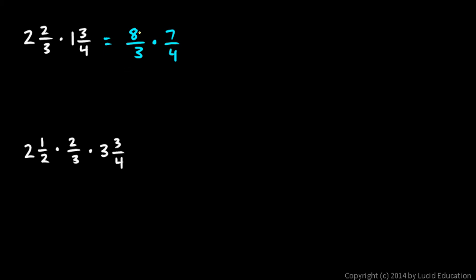And now before I multiply, we can simplify, look at the 8 here and the 4 here, that will reduce to a 2 and a 1, and that just makes the multiplication easier. 2 times 7 is 14, 3 times 1 is 3, so 14 thirds, and we can rewrite that as 4 and 2 thirds.